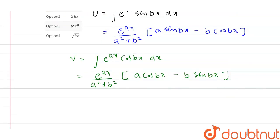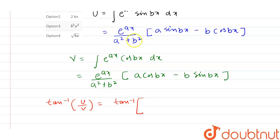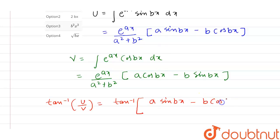Now if we find the value of tan inverse of u upon v — substituting the values of u and v, the e raised to power ax upon (a squared plus b squared) cancels out. We are left with a sin(bx) minus b cos(bx), upon a cos(bx) plus b sin(bx).